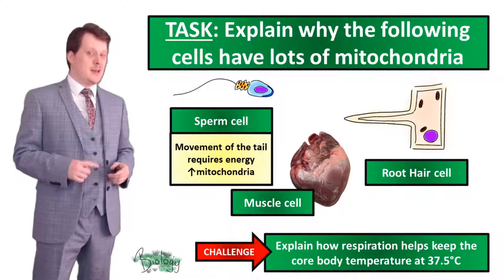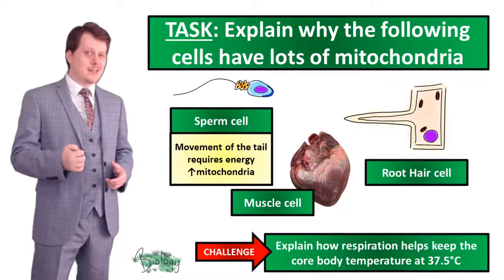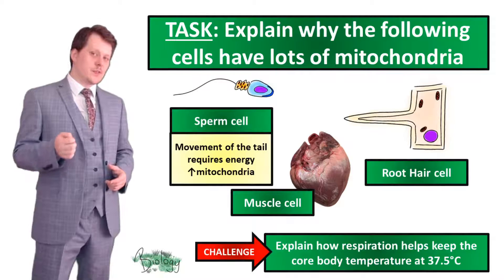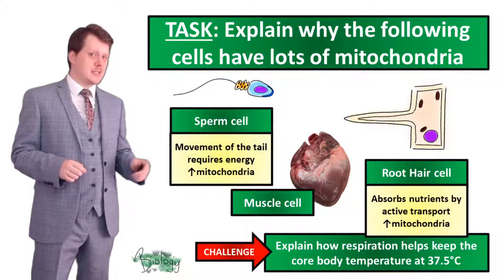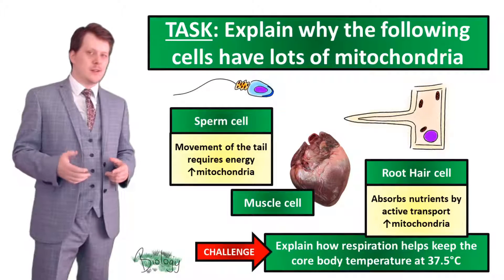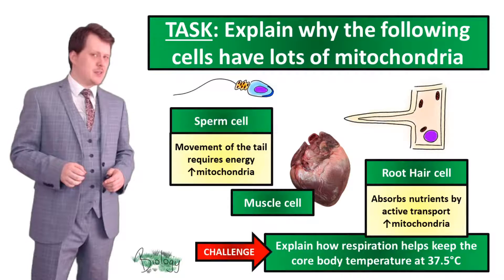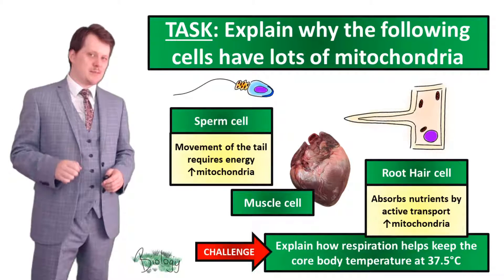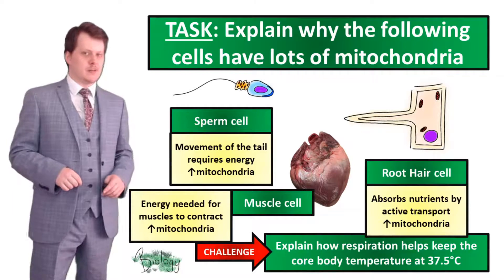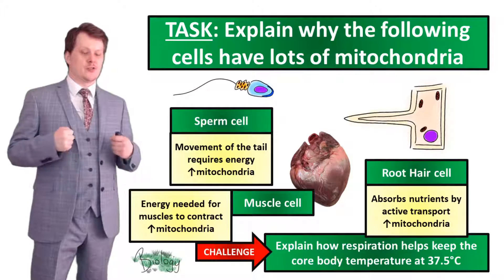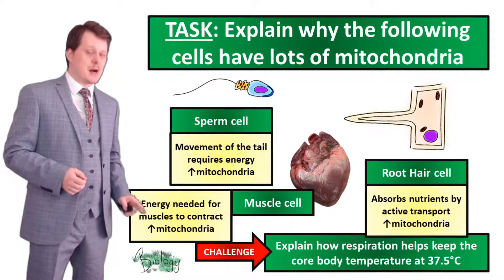The sperm cell has a lot of mitochondria because the movement of its tail requires energy, which is released through aerobic respiration occurring in the mitochondria. The root hair cell has a lot of mitochondria because it requires a lot of energy to absorb nutrients by active transport — that energy comes from aerobic respiration in the mitochondria. Muscle cells also have a lot of mitochondria because they need energy to contract, released through aerobic respiration in the mitochondria.